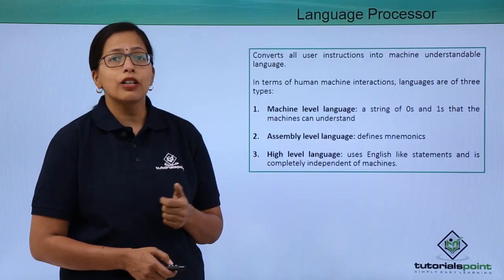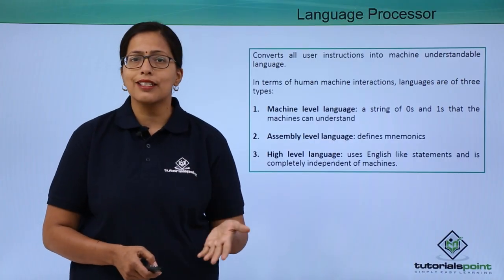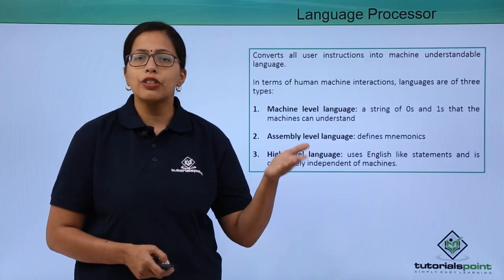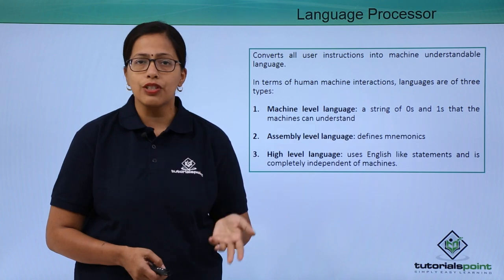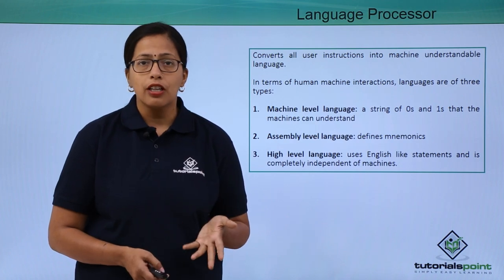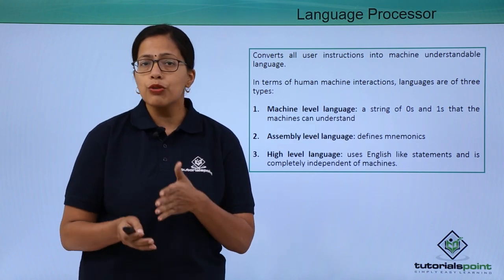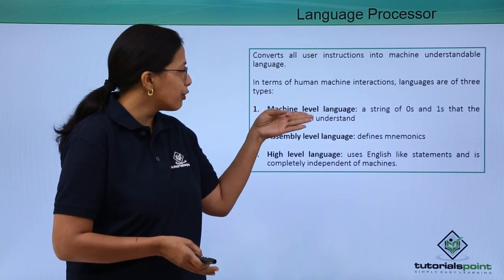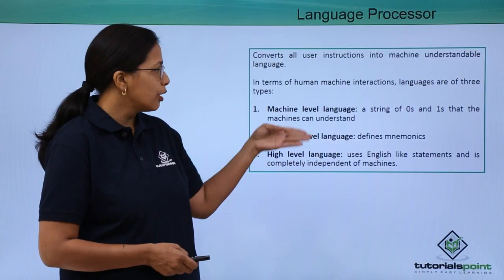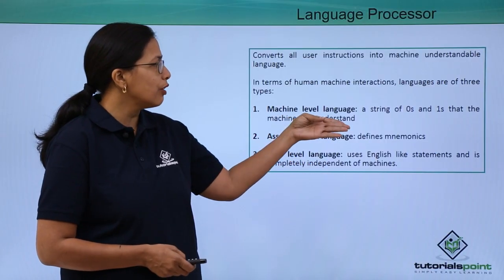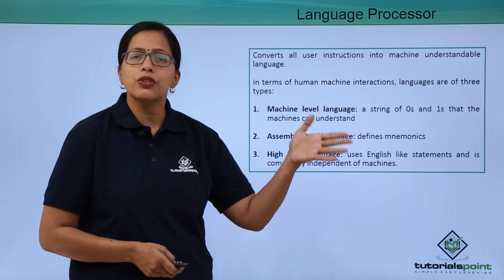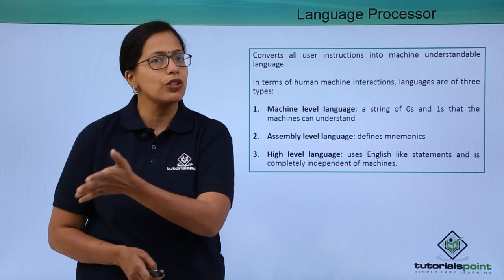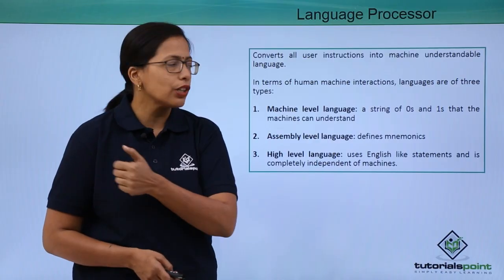Now let's see what a language processor is. As discussed, the computer language is different and our language is different. When it comes to human and machine interactions, we can have three types of languages. Machine level language consists of simple strings of zeros and ones — the binary language that the computer understands.